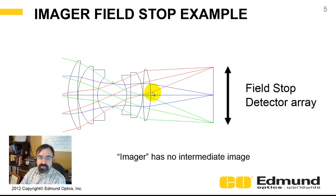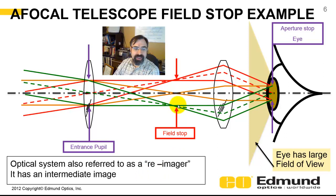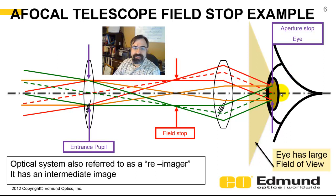Here is a case where we have a re-imager — there is an intermediate stop here. This is a Keplerian afocal, and you can see the detector in this case is your eye, and your retina is huge. You have this huge field of view, this cone right here, but that's not going to limit your field of view. Where this comes to an intermediate image, there'll be an aperture there, and that would be your field stop — that limits how much you can see. Because it has an intermediate image, this could be called a re-imager.